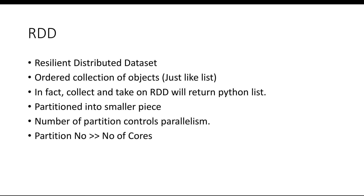Before we talk about Resilient Distributed Datasets, understand that Spark stores all of its data in memory. Remember how we talked about Hadoop storing its data to disk, because storing data in memory was a bad idea — if one of the nodes fails, you lose the entire computation as well as the data on that node. So since Spark stores data in memory, one would ask: wouldn't it have the same issue? Well, it turns out it would — so how did Spark overcome this?